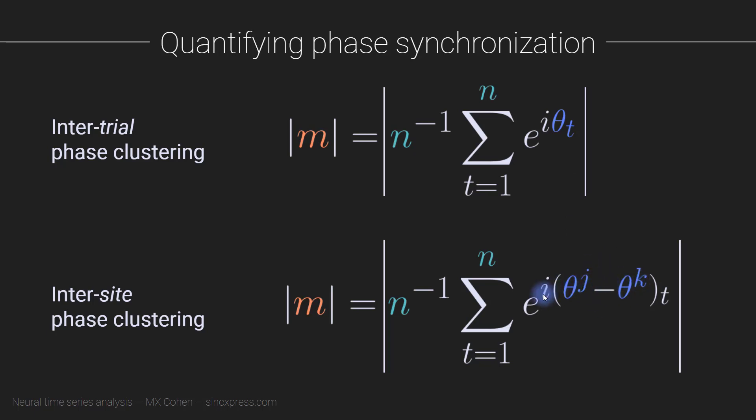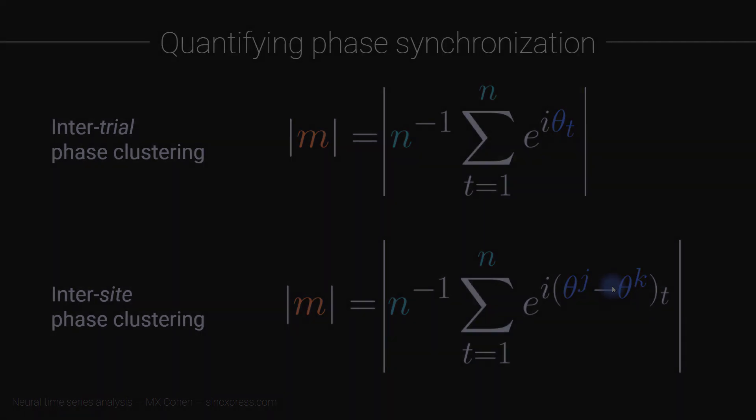The only difference is that instead of using the phase angles from a single electrode, we are using the phase angles from two different electrodes. It's the difference between those phase angles. This superscript J and K gets a little confusing because this is a superscript indicating power e to the i and then this stuff. This superscript here is indicating the electrode. This is the phase angle time series at time point t from electrode J minus the phase angle at time point t from electrode K. Otherwise, the formula is really the same. We're just replacing one phase value with a difference of phase values between two electrodes.